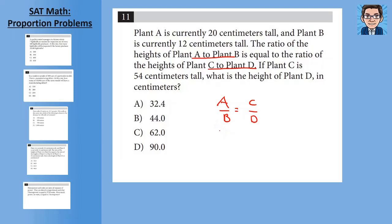A is going to be 20. B is going to be 12. That's going to equal C, which is 54. And the unknown here is D. Cross multiply. 20 times D equals 54 times 12, which is 684. Divide by 20, and you get D equals 32.4, which is answer A.